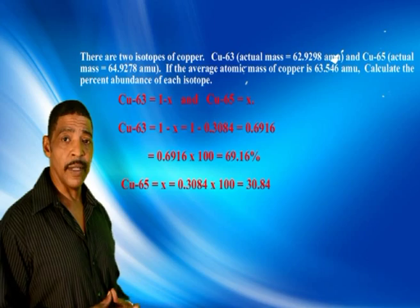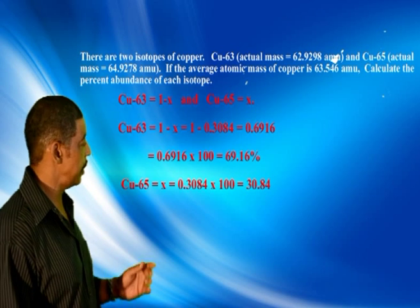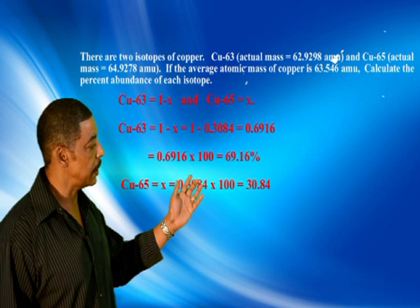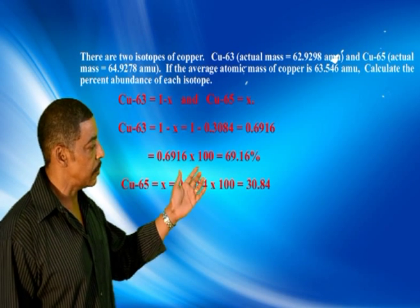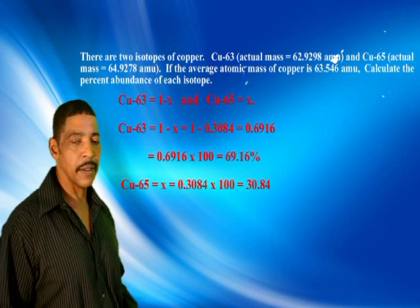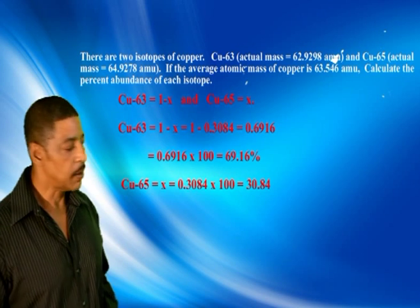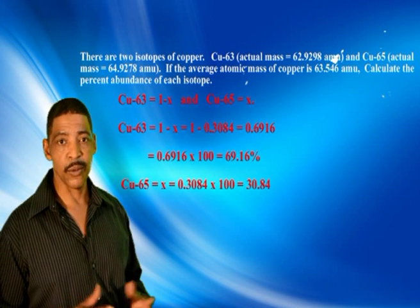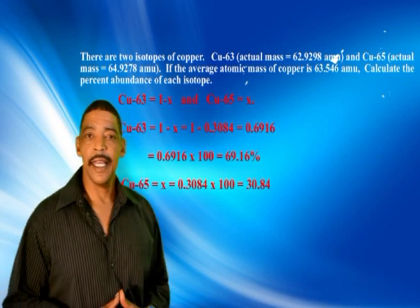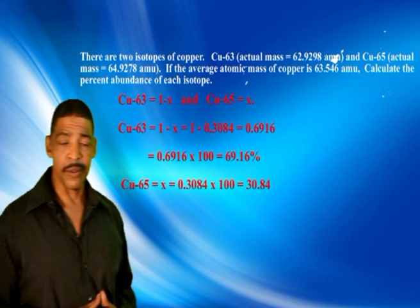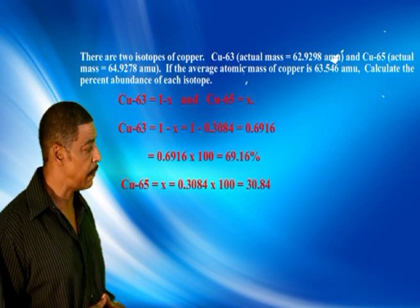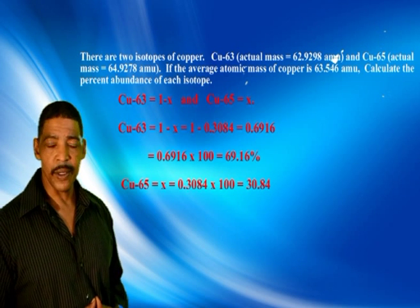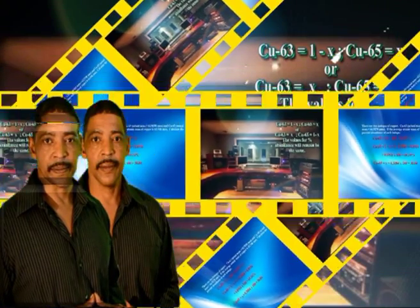And from the previous calculation, where x equals 0.3084, we multiply 0.3084 times 100. The percent abundance of copper-65 is therefore 30.84%.